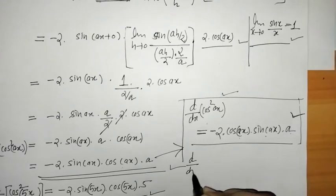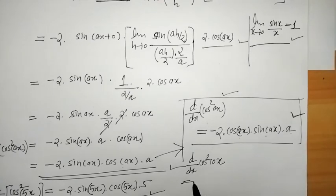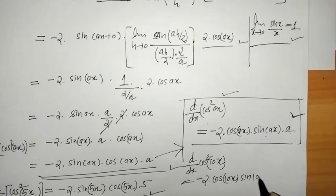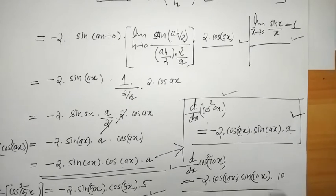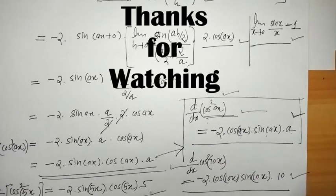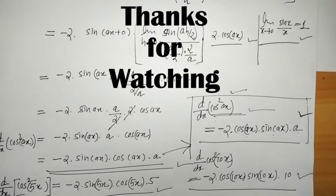For example, if we have to find the derivative of cos squared(tan x), then by substituting, this is minus 2 into cos(tan x) into sin(tan x) into the derivative of tan x. This is the derivative of cos squared ax. That's it for now — see you in the next video. Thank you, keep watching.